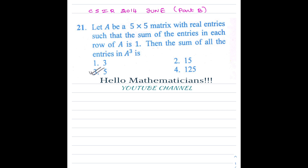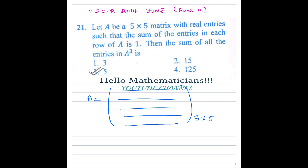So what is given? Basically we are given a matrix A and it is a 5 by 5 matrix. They are saying that if you sum the entries in the first row you will get 1, the second row you will get 1, and similarly for other rows also. Given such a real 5 by 5 matrix, we want to find the sum of all the entries in A cubed.